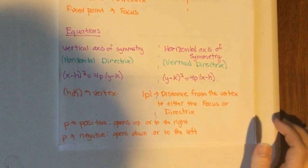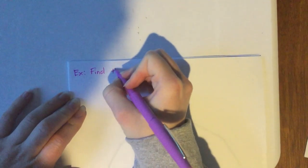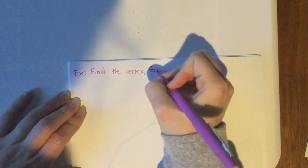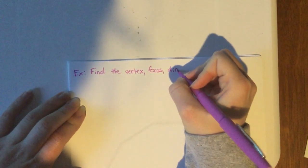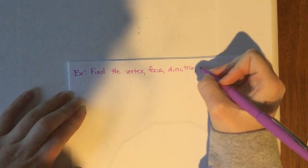We are going to go to our first set of example problems — this will be part one. Our first example is going to ask us to find four things: the vertex, the focus, the directrix, and the axis of symmetry.